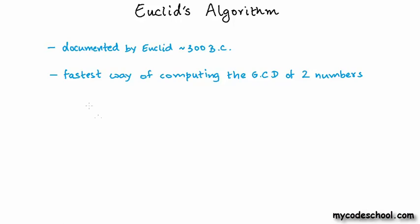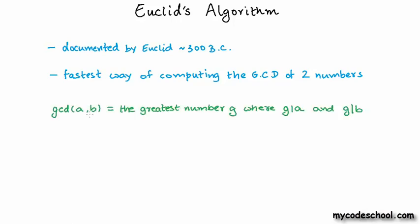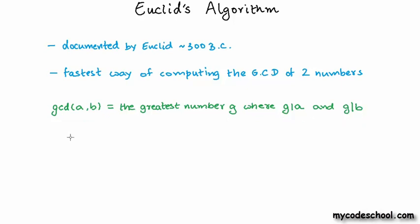GCD, or greatest common divisor, is the same concept that you probably learnt about in school. Let's define it in a slightly more formal way. Given two numbers A and B, the GCD of A and B is the greatest number, let's call it G, that divides both A and B. So if we had A as 105 and B as 350 and we did not know about Euclid's algorithm, how could we compute their GCD?